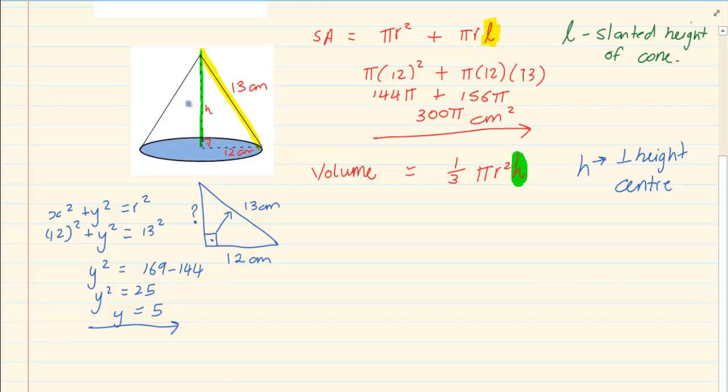So now we have that h is 5. So the volume is a third pi. Our r is 12 squared and our h is 5. So we have got 1 over 3 times 12 squared times 5 which is equal to 240 pi and we are going to say centimeter cubed because it is volume.